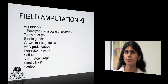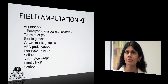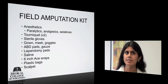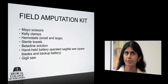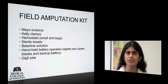Let's review the contents in the field amputation kit. In the kit, we have anesthetics, paralytics, analgesics and sedatives, two tourniquets, sterile gloves, gown, mask and goggles, ABD pads and gauze, laparotomy pads, saline, 6-inch ace wraps, plastic bags, scalpel, Mayo scissors, Kelly clamps, hemostats both small and large, sterile towels, betadine solution, a hand-held battery-operated sagittal saw with spare blades and backup battery, and a giggly saw.